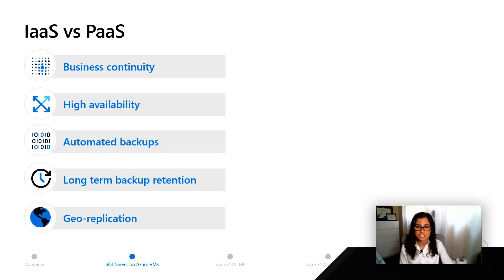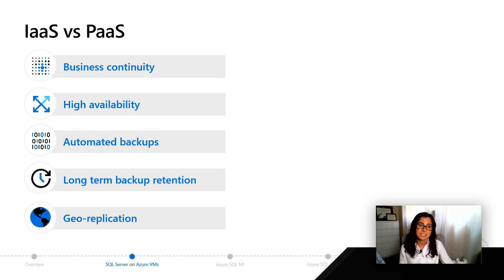With geo-replication, with a few clicks of a button in Azure SQL Database, you can set up geo-replication so you can have read replicas in your region or across other regions. With Azure SQL Managed Instance and SQL Database, you can also set up auto-failover groups, so that in the time of a disaster, we can automatically fail you over to another region without you having to change any connection strings.